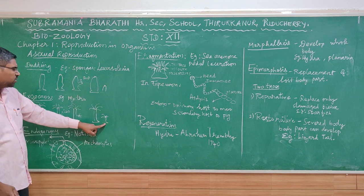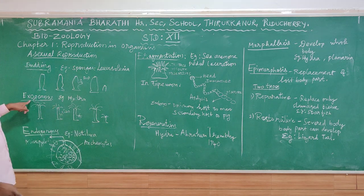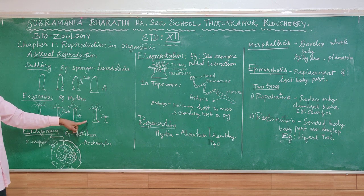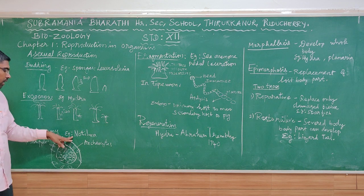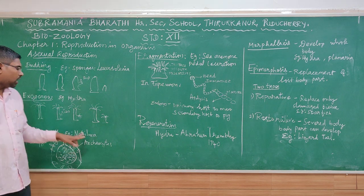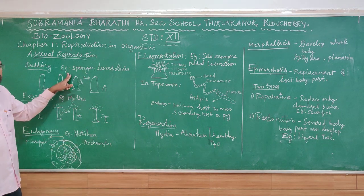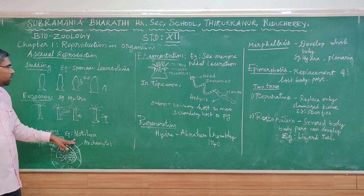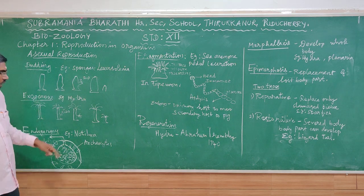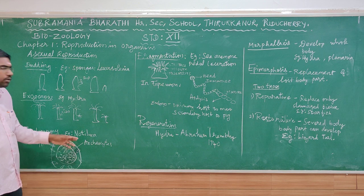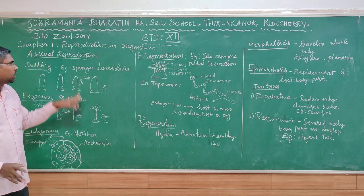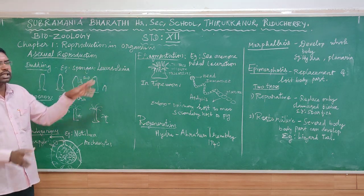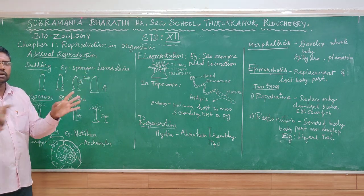Now looking at endogenous budding — this is seen in Naticula, which is a fresh water sponge, not a marine sponge. Fresh water sponges undergo a special type of reproduction involving endogenous budding. The example given is Leucosolenia for marine, while the fresh water sponge demonstrates endogenous budding.